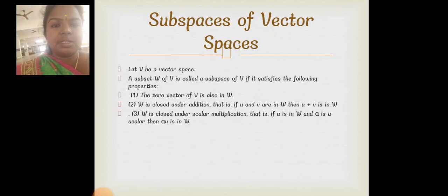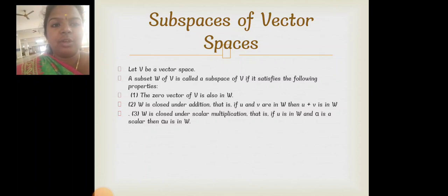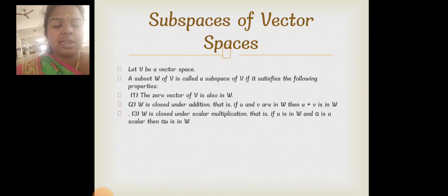Here comes the definition of a subspace. Let V be a vector space. A subset W of V is called a subspace of V if it satisfies the following properties: (1) the zero vector of V is also in W; (2) W is closed under addition — if U and V are in W then U+V is in W; (3) W is closed under scalar multiplication — if U is in W and alpha is a scalar then alpha·U is in W.